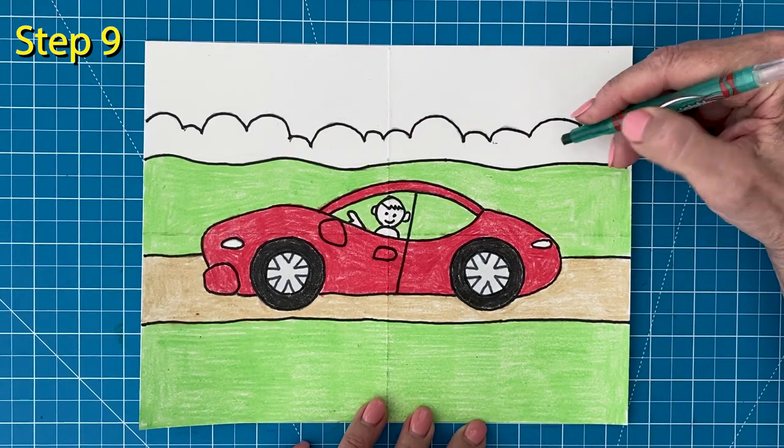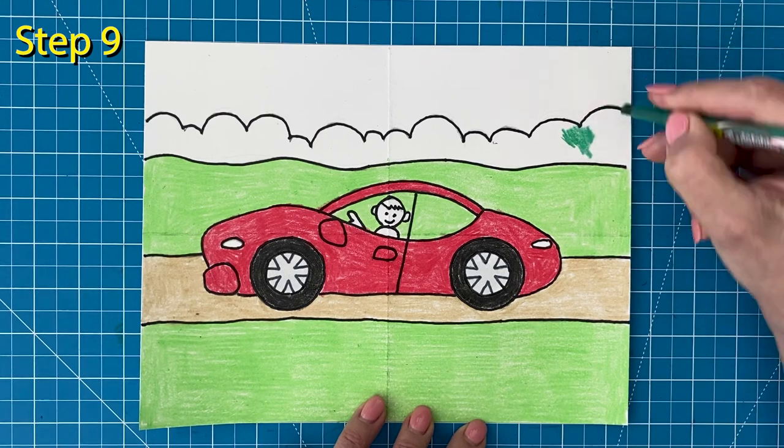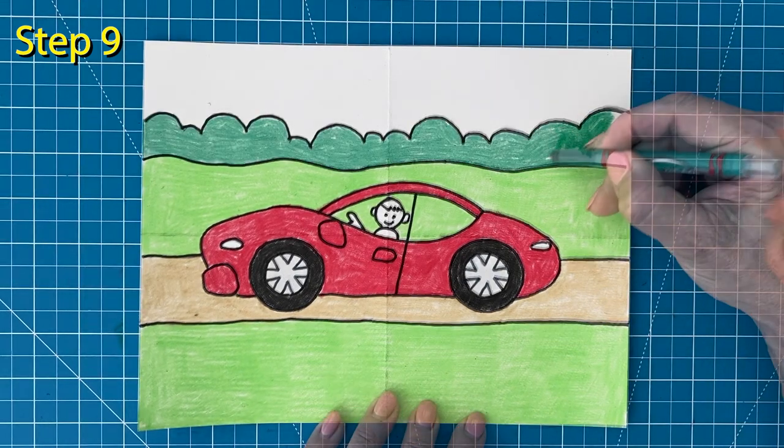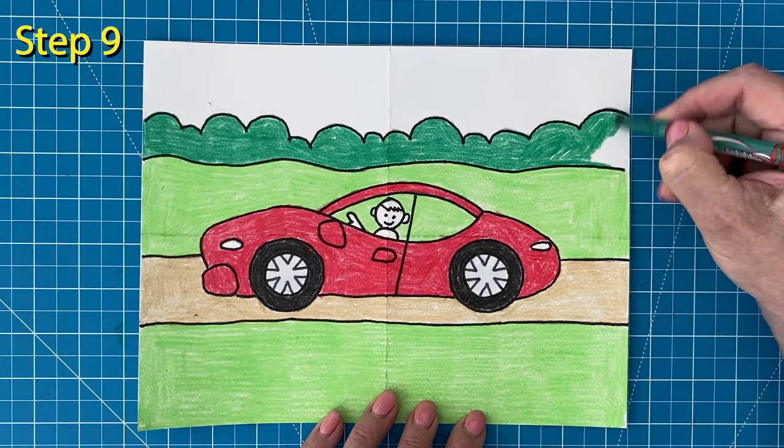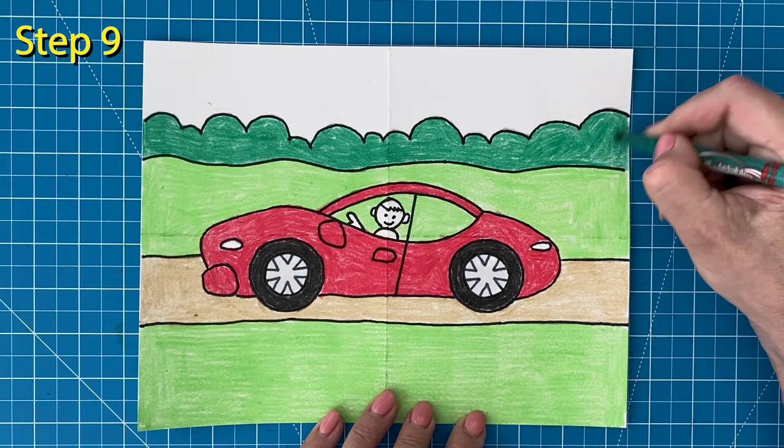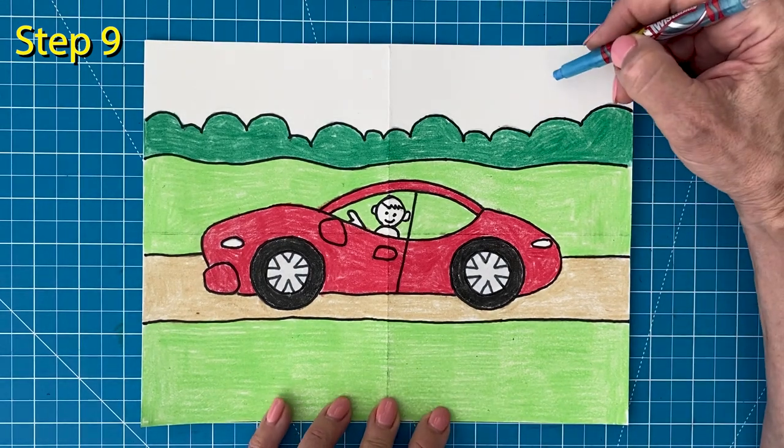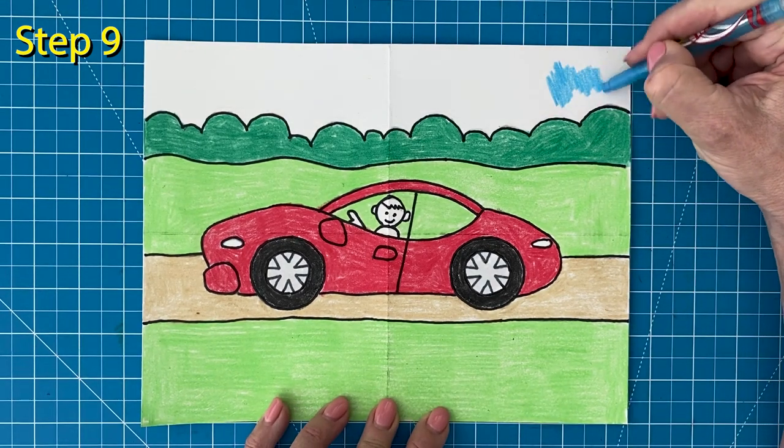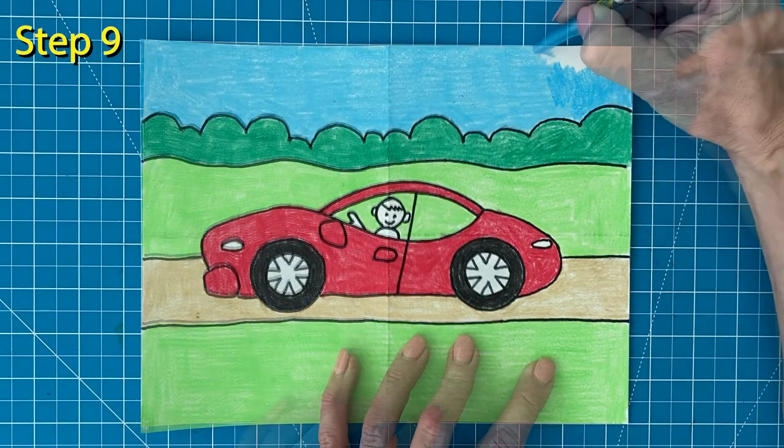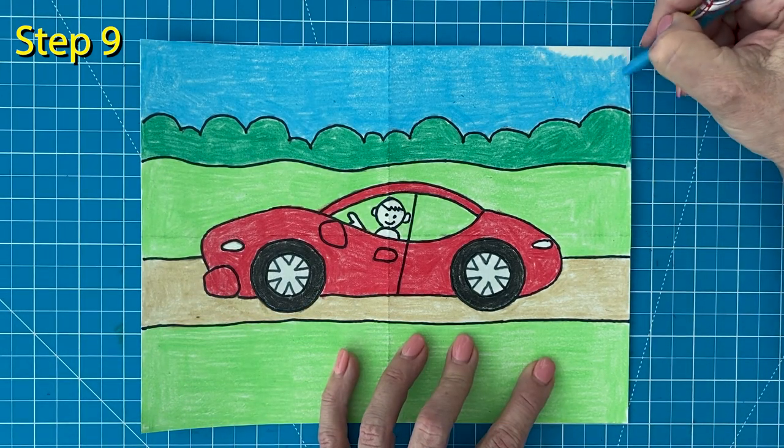Now the background trees need to look a little different than the grass. So I'm going to use my darker green there. And the last thing to do is color in the sky. I always love how this light blue color looks.